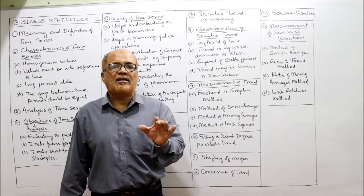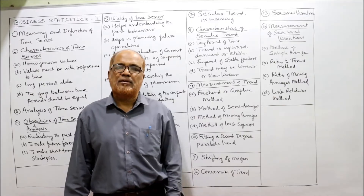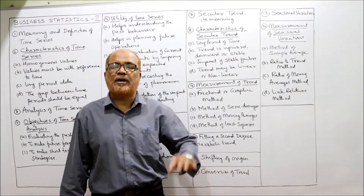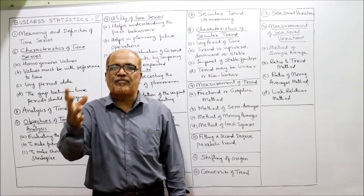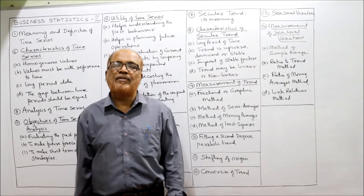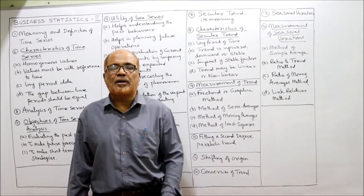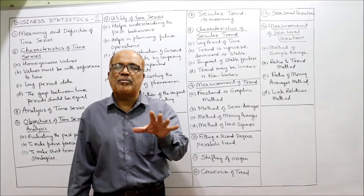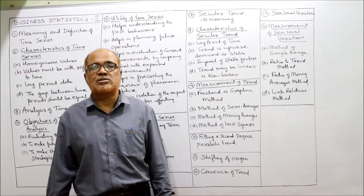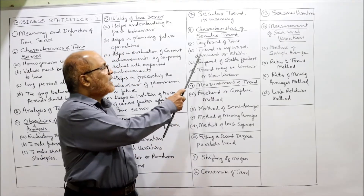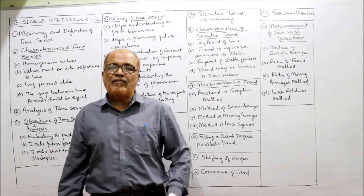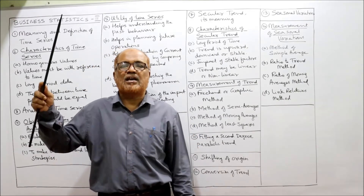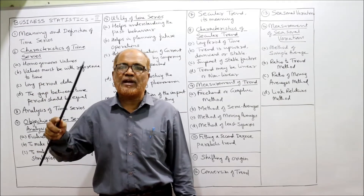Characteristic features of secular trend: first, long period of time. We study the trend not just for two or three years but for a long period — approximately eight, ten, or fifteen years. Below five years, we cannot reliably study long-term trend. Second, the trend is upward, downward, or stable — meaning the variable is either increasing, declining, or fluctuating.